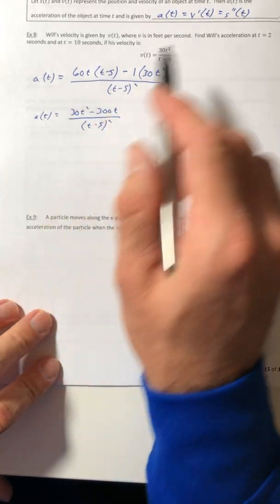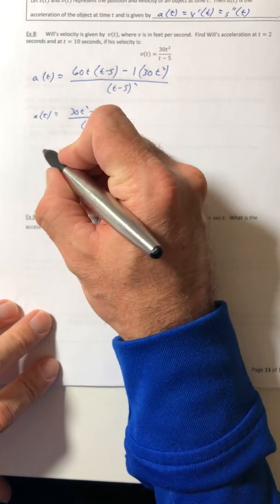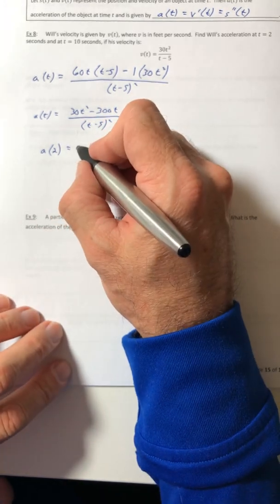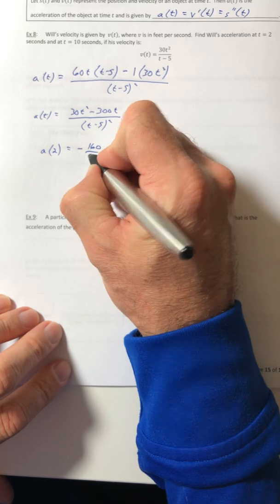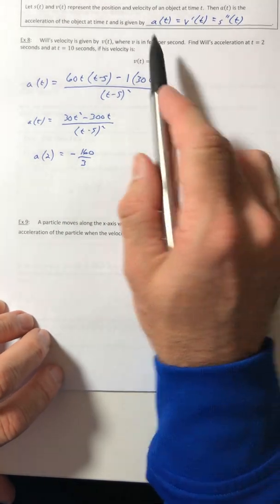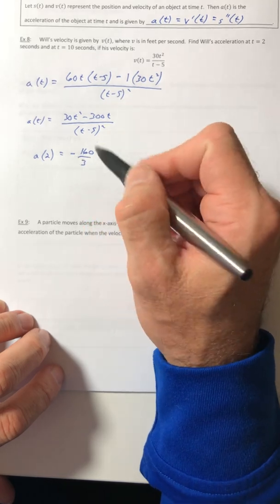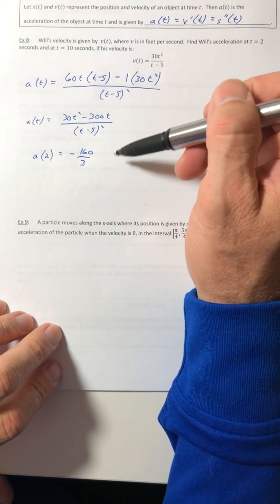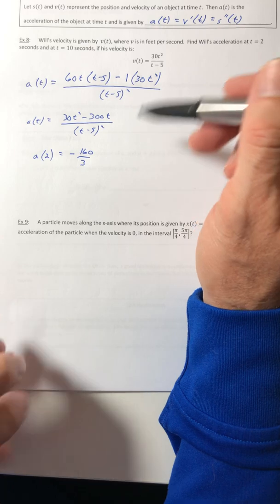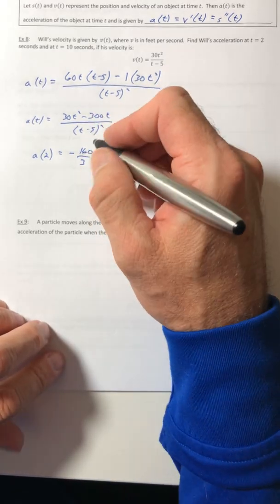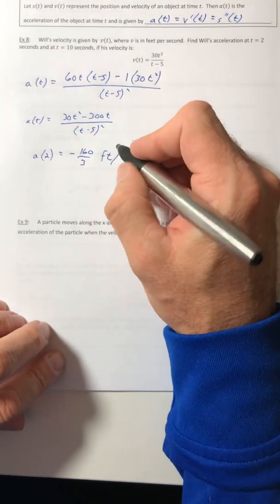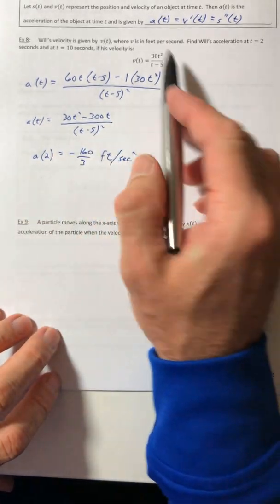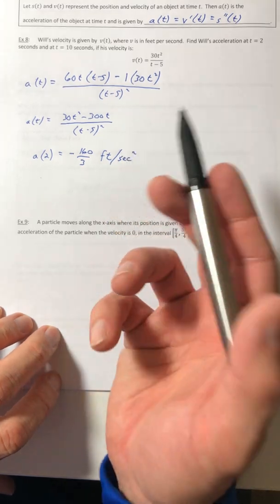Okay, so there's my acceleration, so now I just need to plug in the 2 times that they gave us. So plug in the 2 in for t and it's going to simplify down to negative 160 over 3. And we have units given to us in the problem which means we need units in the answer. So acceleration is always a length per the time unit squared, so feet per second squared.